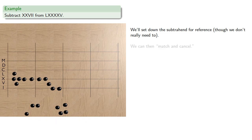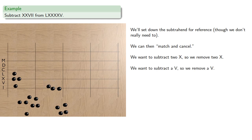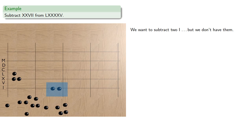We can then match and cancel. We want to subtract 2X, so we'll just remove 2X. We want to subtract a V, so we'll remove a V. We want to subtract 2I's, but we don't have them.